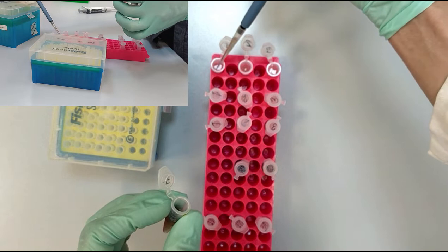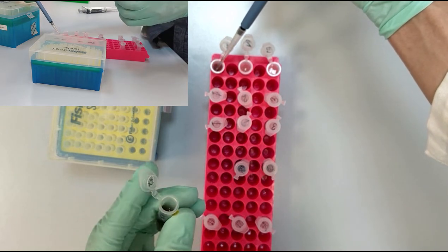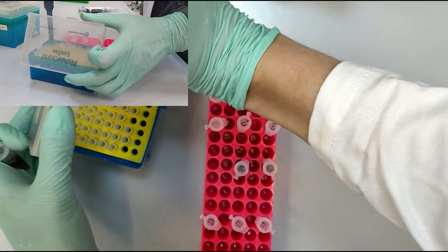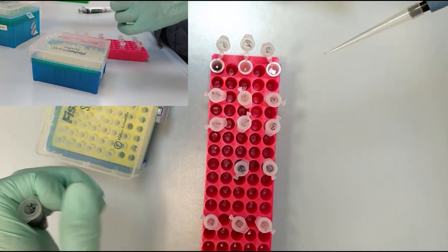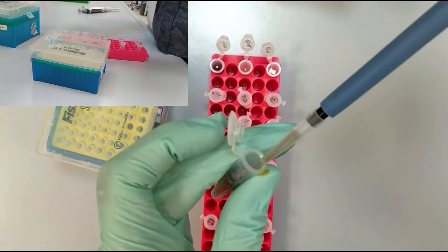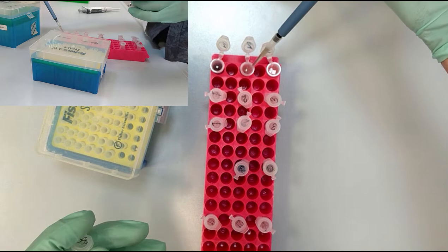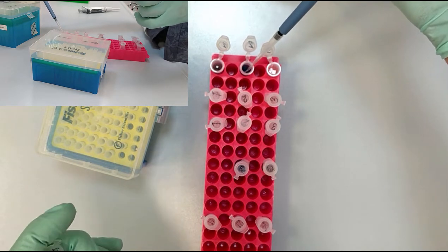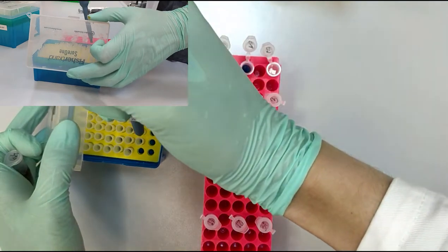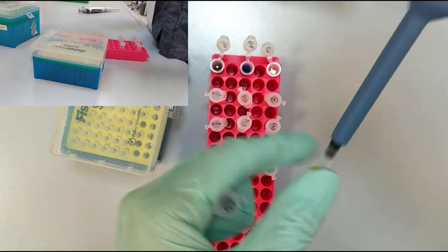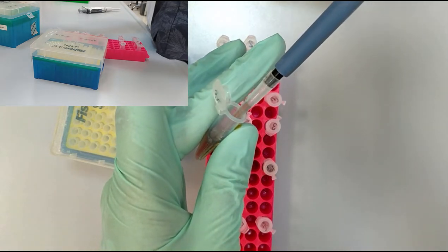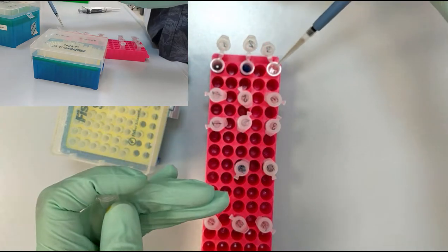So we add to the first one and then change the tip because we assume it to be contaminated. Take 200 and add it to the second solution. Again 200, and add it to the last one.